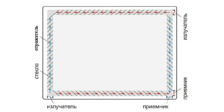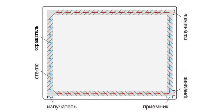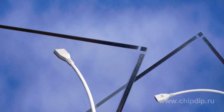The structure of touch screens based on surface acoustic waves is quite complicated. A screen of this type is a glass panel with piezoelectric radiators placed at the corners, which create ultrasonic vibrations. Deflectors are located on the edges of the panel, and with their help, acoustic waves are spread over the whole surface of the screen and transmitted to piezoelectric detectors.